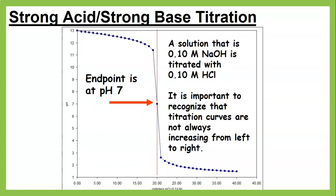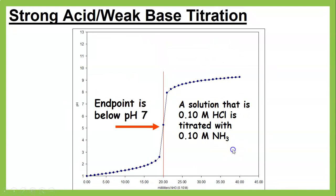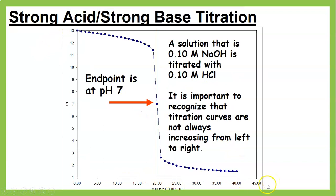You can also have the base in the beaker and slowly add the acid. With a strong acid and strong base set up this way, we start at a high pH and it decreases as acid is added, ending at pH 7. You should be comfortable reading these reversed graphs where the base is in the beaker and you're titrating with acid.